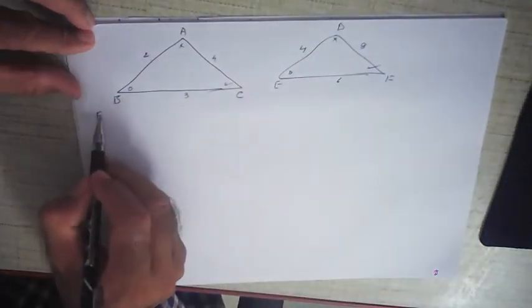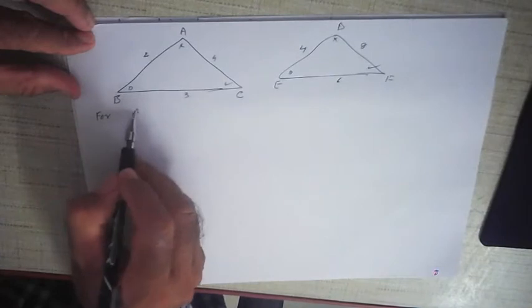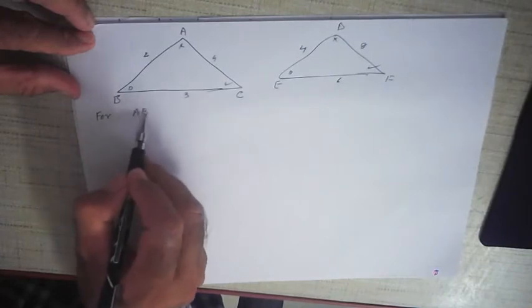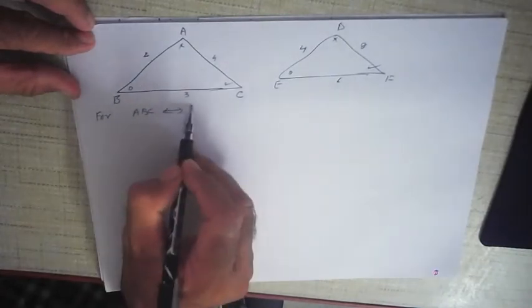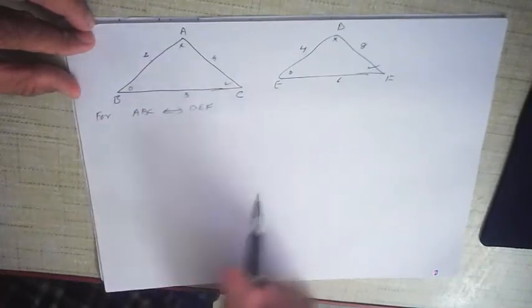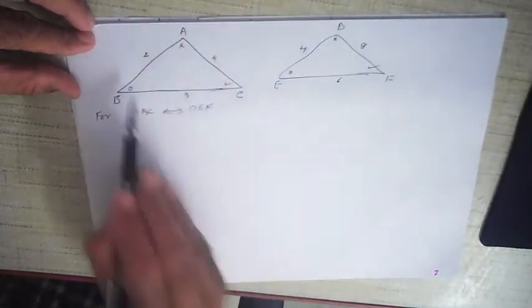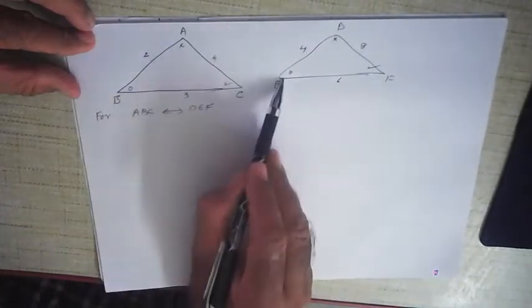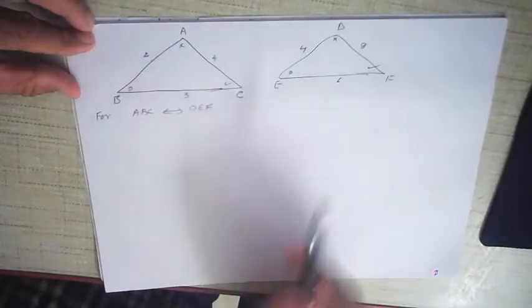For a given correspondence ABC to DEF, notice the order: A corresponds to D, B corresponds to E, C corresponds to F.